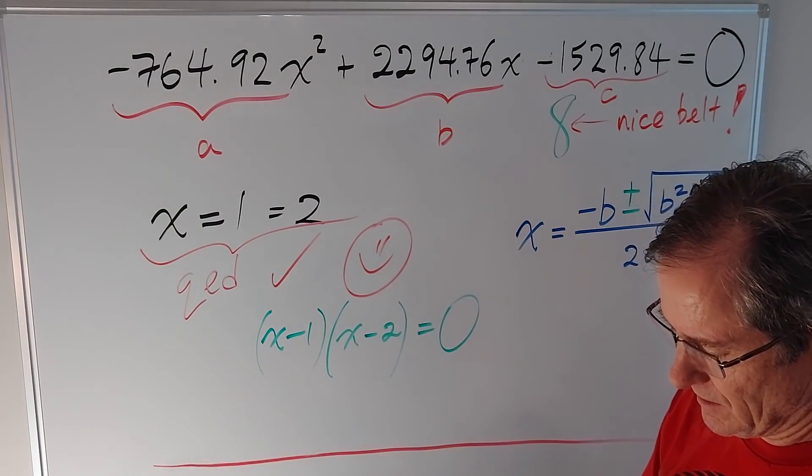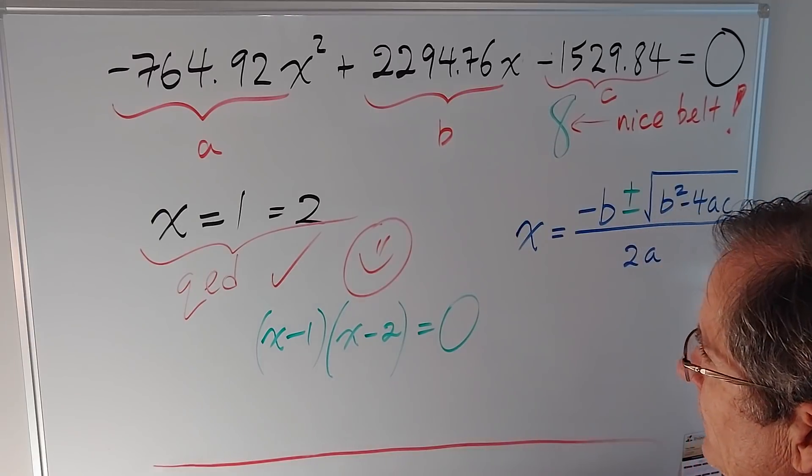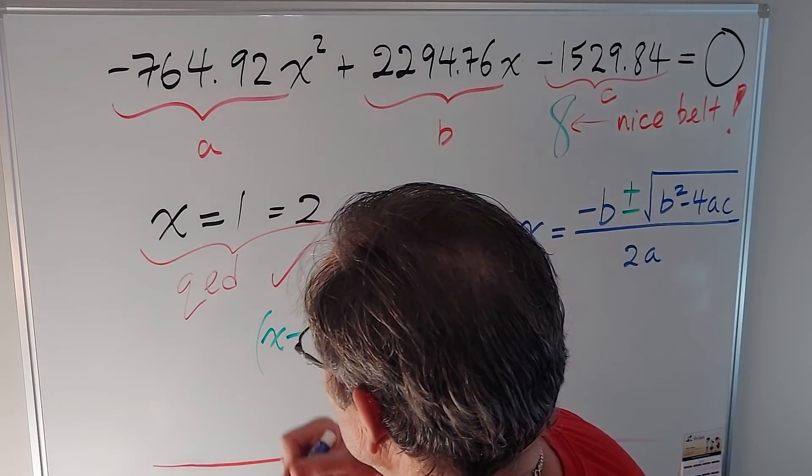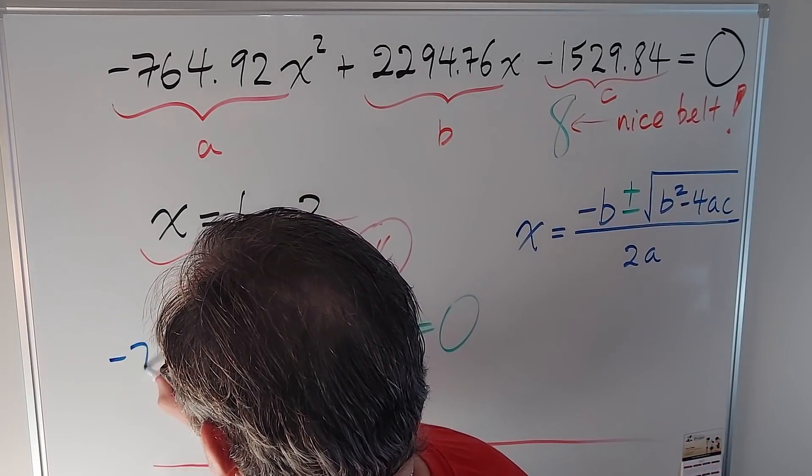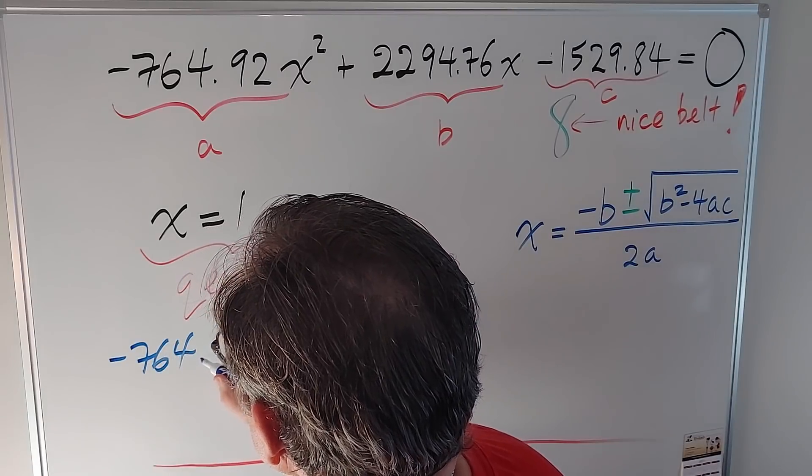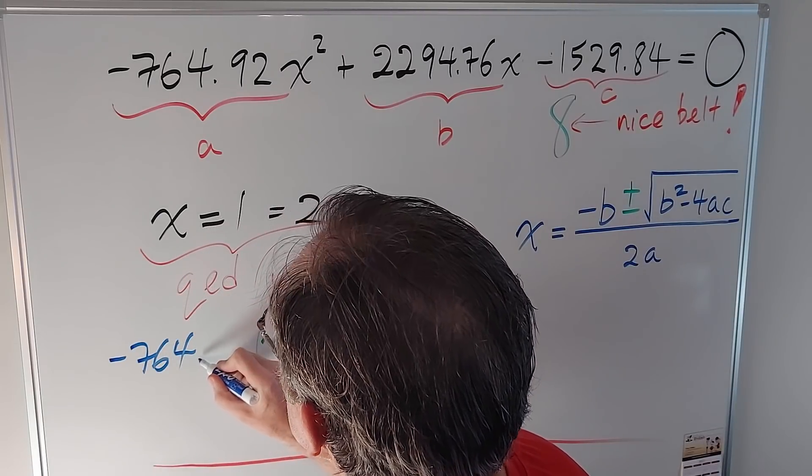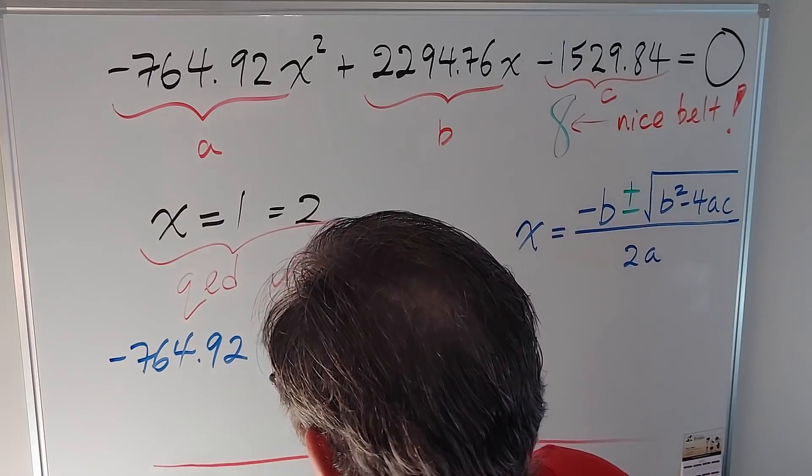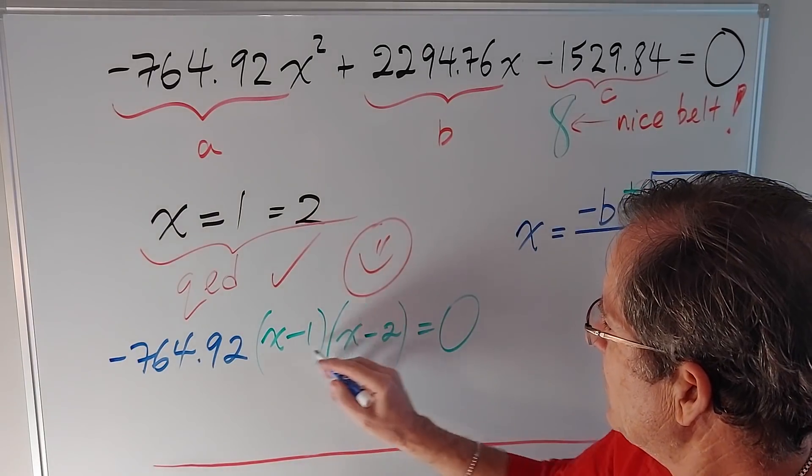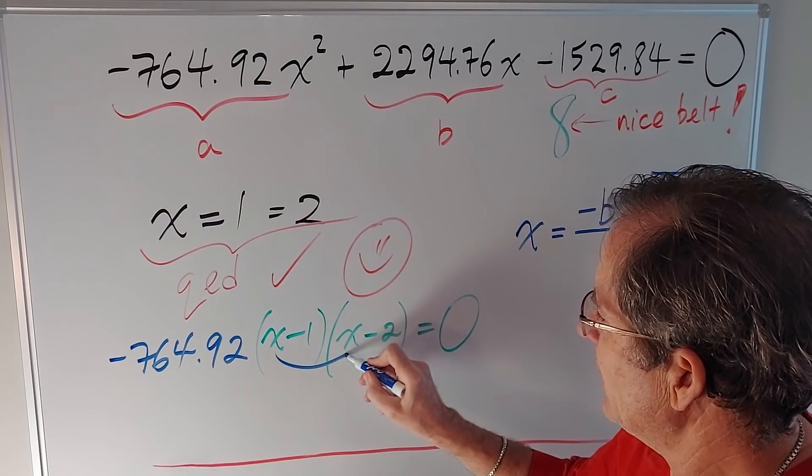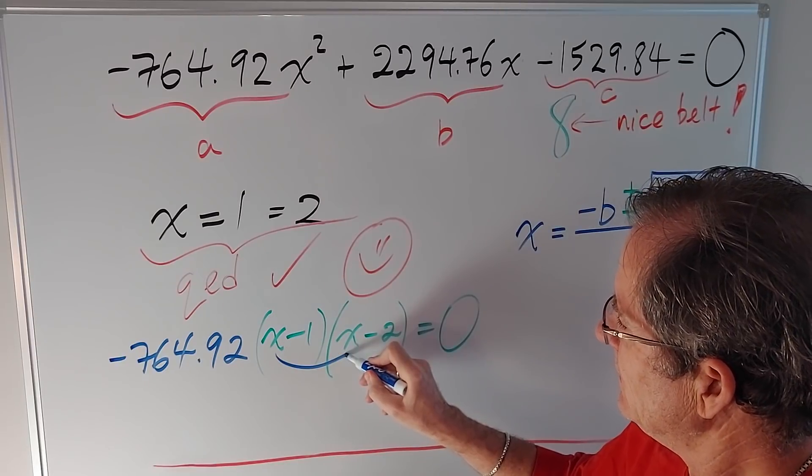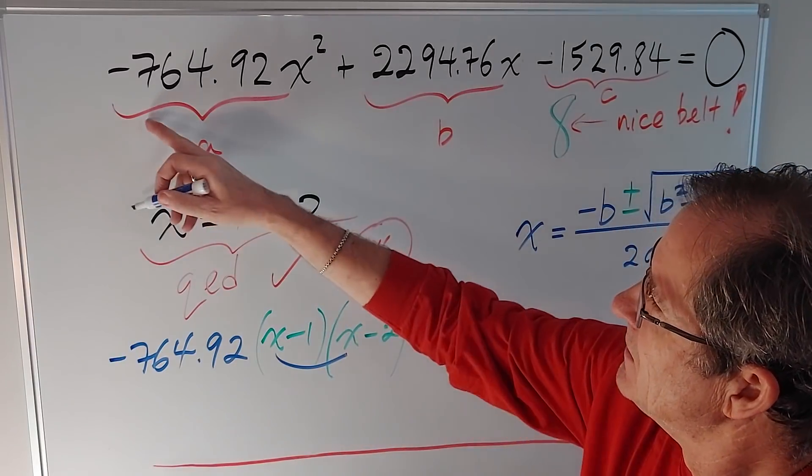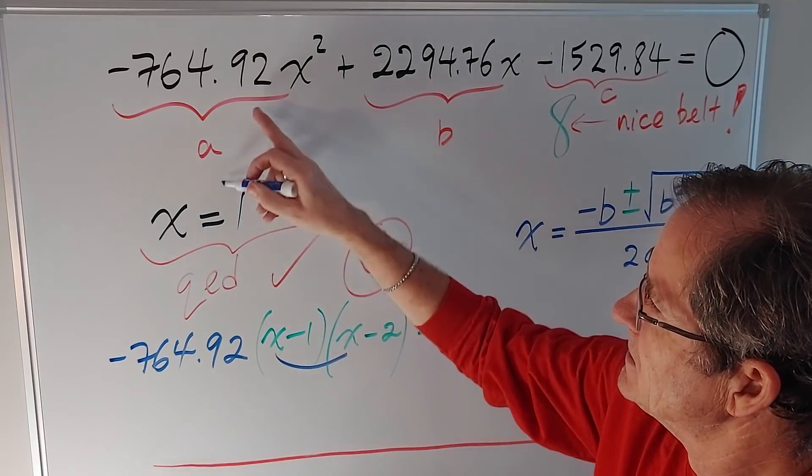But what's the number in front? Well, that would just be the a value, negative 764.92. Because if you multiply this out, you're going to get, first of all, x times x, x squared, times that number. It's got to give you this term, so that number's the same as this one.